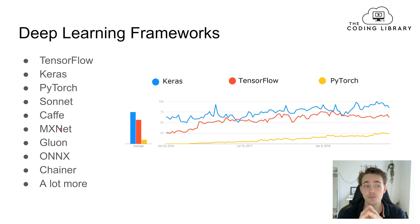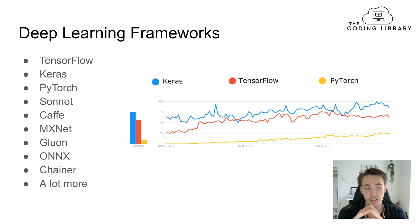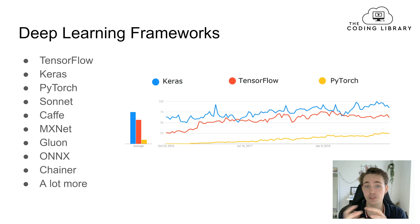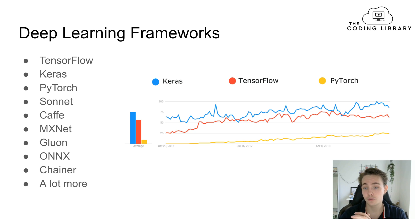On the first slide, we're going to talk about the different deep learning frameworks we have. The most popular ones we're going to focus on are TensorFlow, Keras, and PyTorch. We also have some others like Sonnet, Kappa, MXNet, and Chainer, which have different features and pros and cons. But the most important and most used ones are TensorFlow, Keras, and PyTorch, which is what we're going to compare.